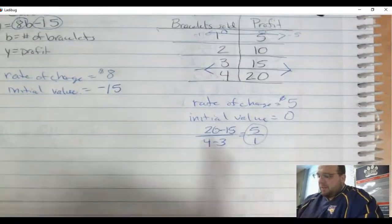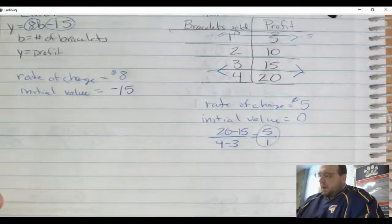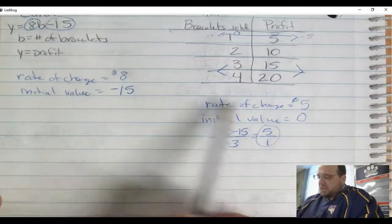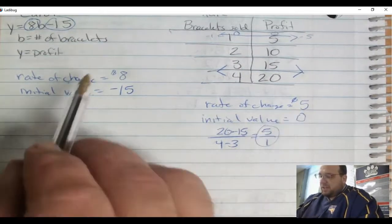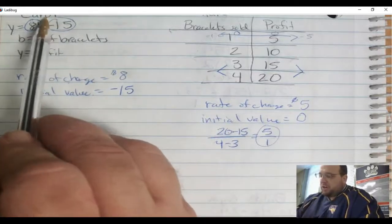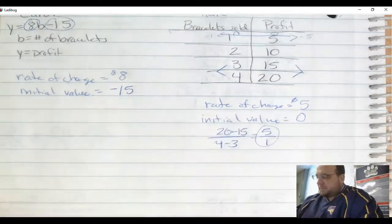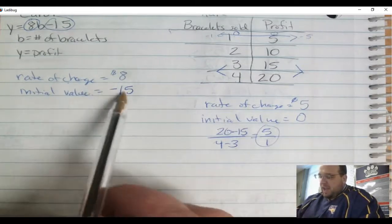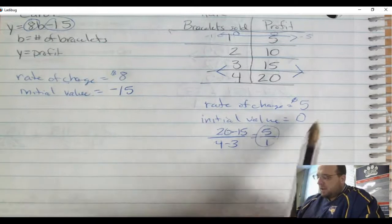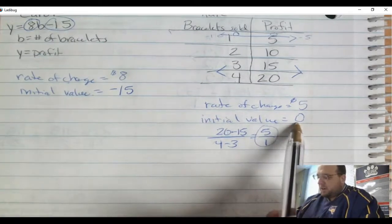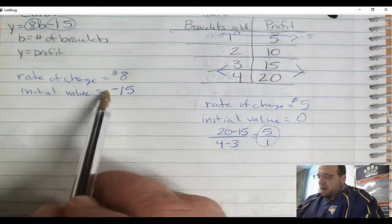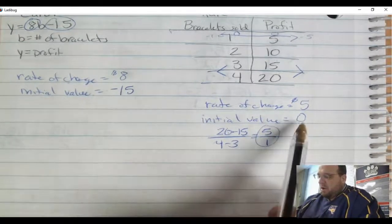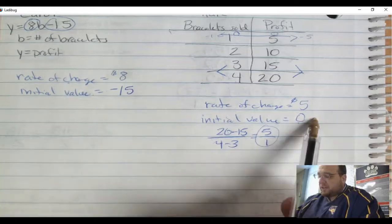So now let's compare Carol and Kate. I notice a couple things. Carol's rate of change is greater than Kate's rate of change. This means that Carol charges more for a bracelet than Kate does. And I see maybe a reason why that is - because Carol has an initial value of negative 15, whereas Kate had an initial value of 0. So this means that Carol started by owing more money than Kate. She actually started owing $15 more than Kate.